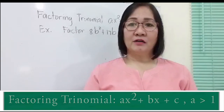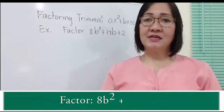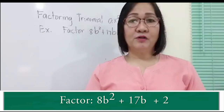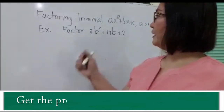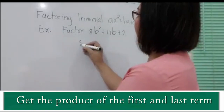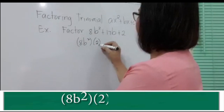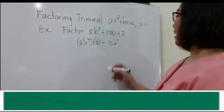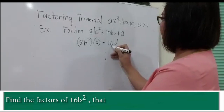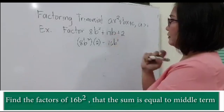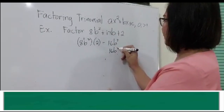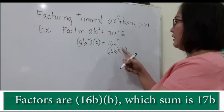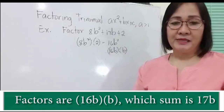Let's have an example. Factor 8b² + 17b + 2. To factor the given trinomial, we have to follow a rule. The first rule is to get the product of the first and the last term. So you have 8b² times 2, which is equal to 16b². The next rule is to find the factors of 16b² wherein the sum is also equal to the middle term, which is 17b. So we have 16b times b, and the sum of 16b and b is equal to 17b.